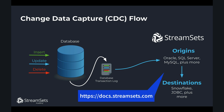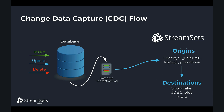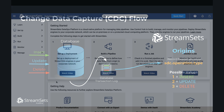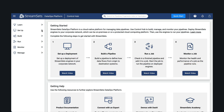Check the StreamSets documentation for a full list of origins and destinations. When a CDC origin is configured, the origin generates the record header attribute `sdc.operation.type`. This attribute can have three possible values — one, two, or three — corresponding to insert, update, and delete respectively. Let's now see this in action.